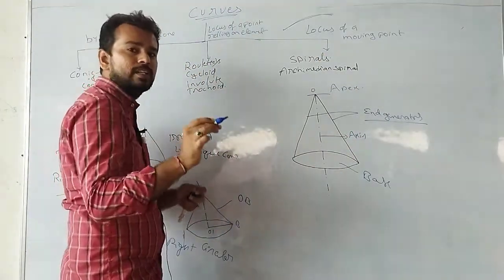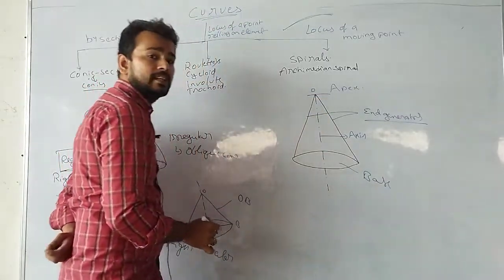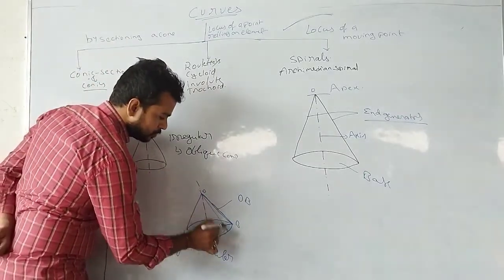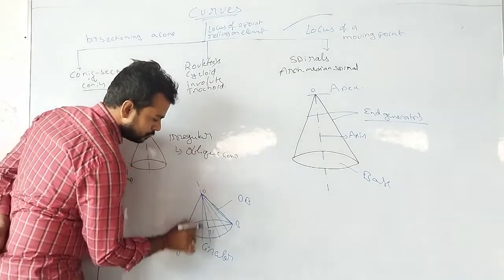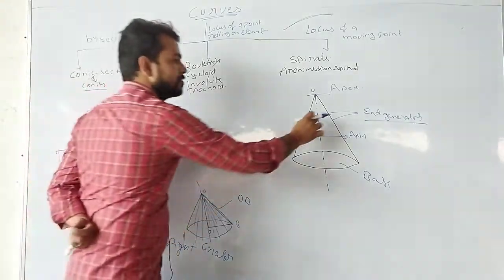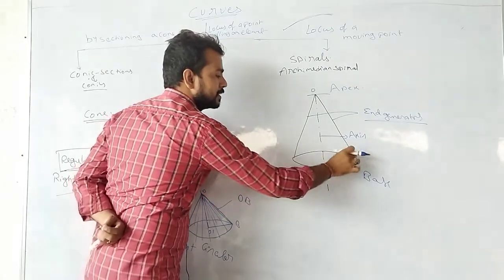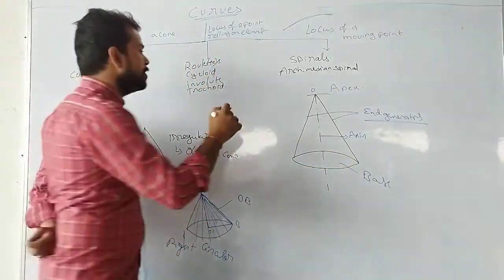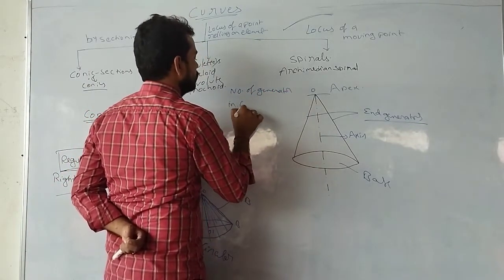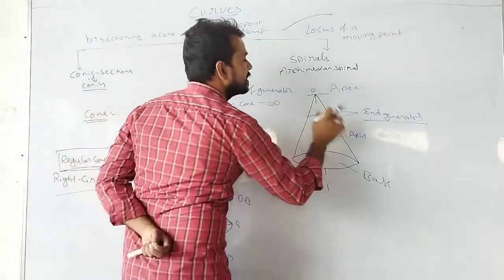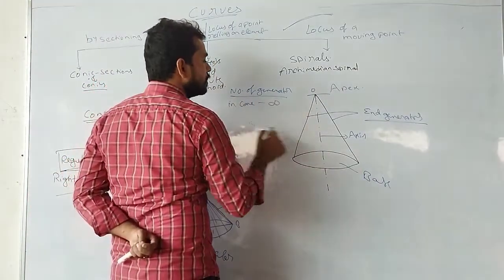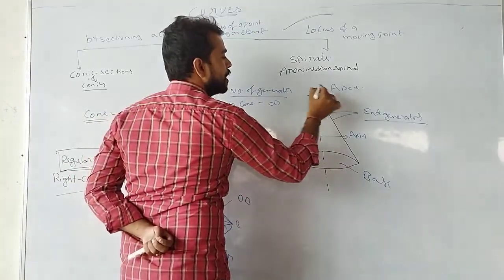Where do two end generators meet? Not only two — a cone has infinitely many generators, because this line traces a locus. This locus takes many positions along the path on the base. So there are infinity number of generators, but only end generators are identical.